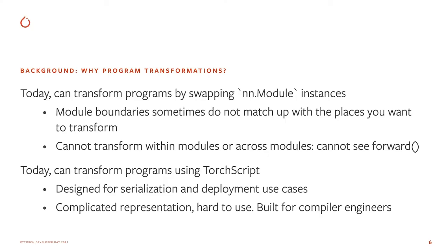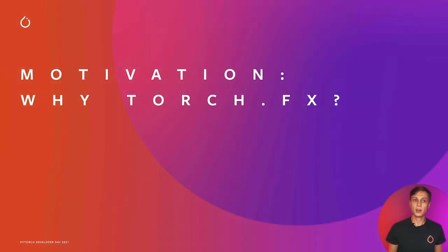A second technique is to use TorchScript. TorchScript can be used to capture a graph representation of the program, including the operators, and this graph representation can be modified to implement transformations. On the other hand, TorchScript is optimized for serialization and deployment, so the way it represents programs is very complicated. Its representation supports many Python features and is optimized for use by experienced compiler engineers, so it is often difficult to use for many developers.